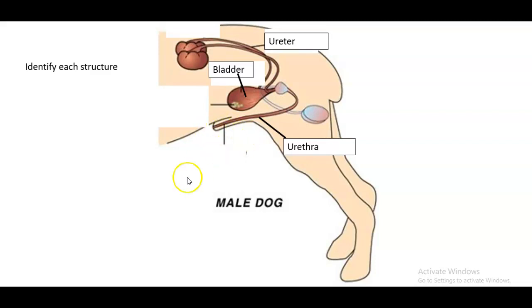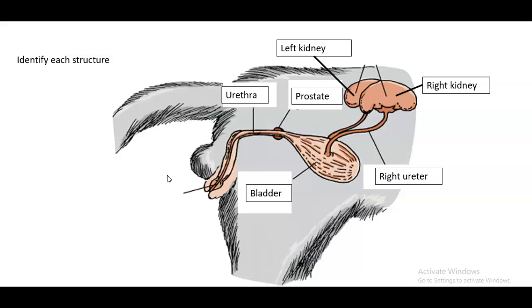As well, the penis is sitting on the ventral aspect of the abdomen pointing cranially. Here we have the left kidney, which is sitting more caudal. We have the right kidney, which is sitting more cranial.